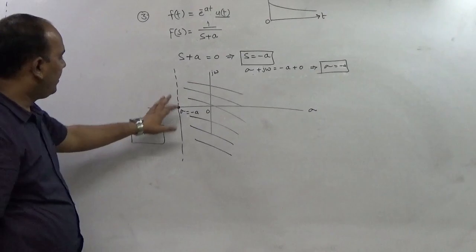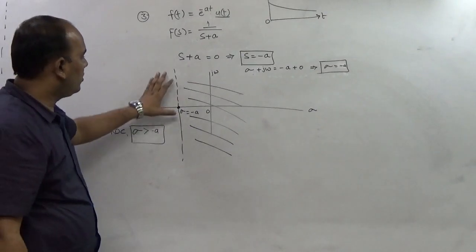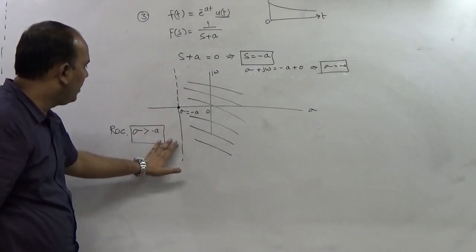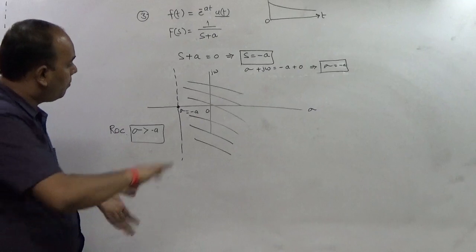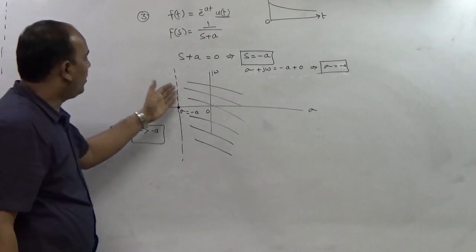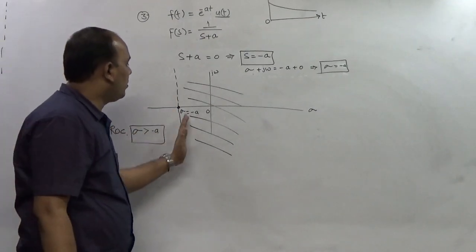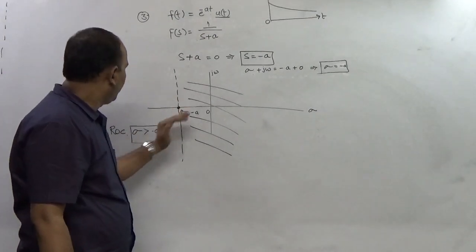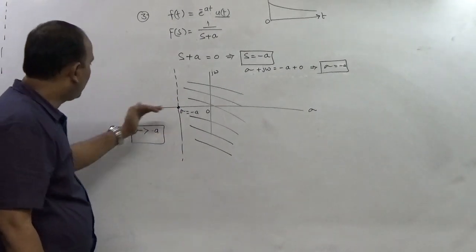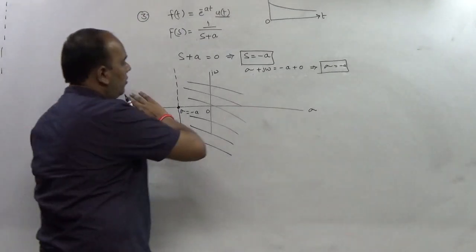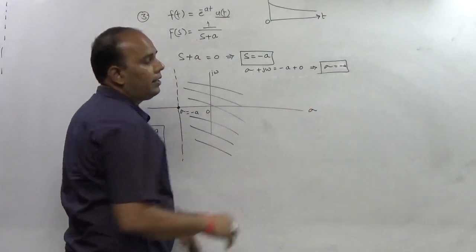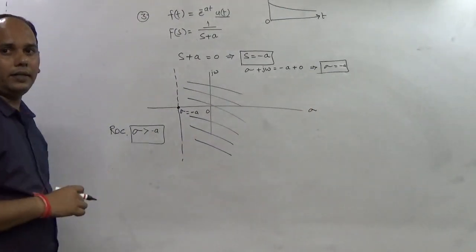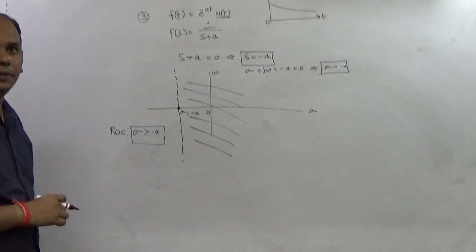We are talking about the region of convergence. The line sigma = -a is the pole location, and the Laplace transform is only valid when sigma is greater than -a — that is, the right side. This is consistent with the fact that the signal is right-sided, so the ROC is the right-hand side of the pole.